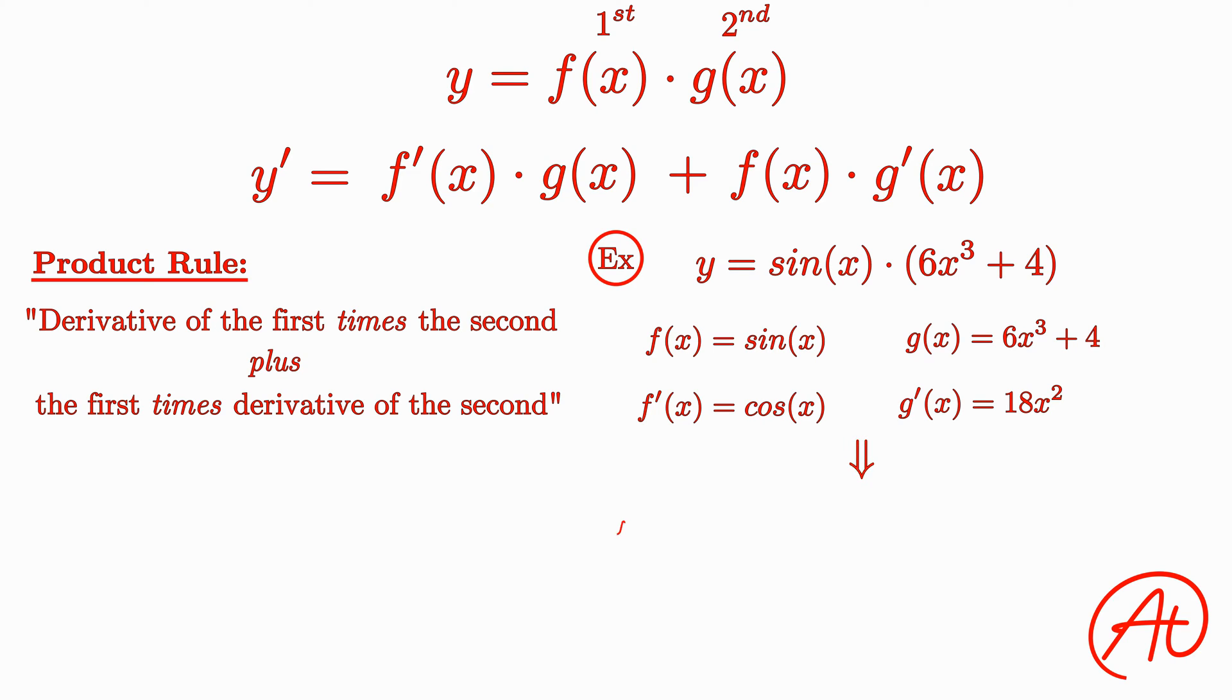Putting it all together, we get y prime equals cos(x) times (6x cubed plus 4) plus sin(x) times 18x squared.